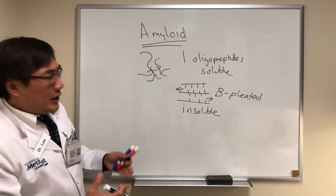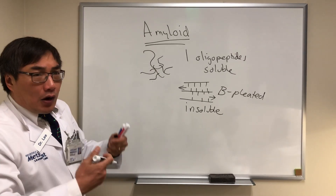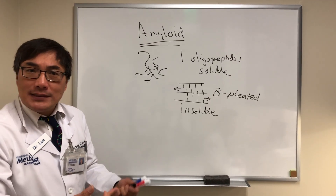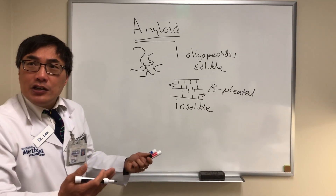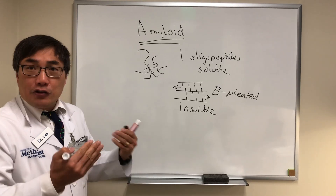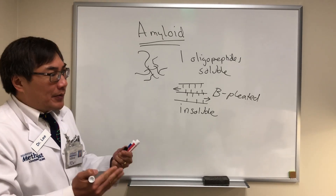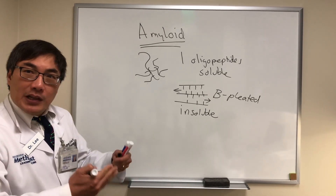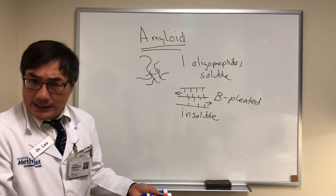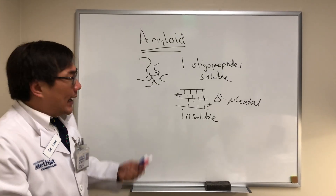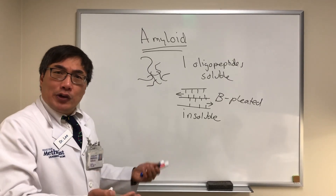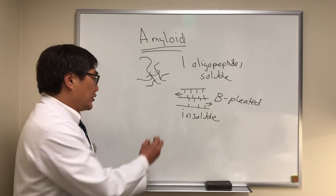So if it deposits in your cornea, you might get a corneal opacity. If it deposits in your brain, you might get a neurodegenerative disease. If it deposits in the blood vessel, the blood vessel can become friable and bleed. And those different types of amyloid can affect us in neuro-ophthalmology.